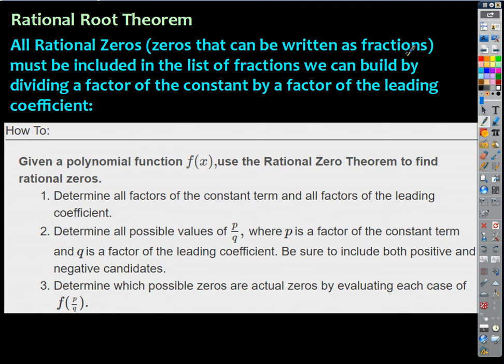All the rational zeros of a polynomial must be fractions where the numerator comes from the factors of the constant term and the denominator comes from the factors of the leading coefficient. We can make a list of all such fractions. Tuesday we'll pick up from here — we got a head start at least.